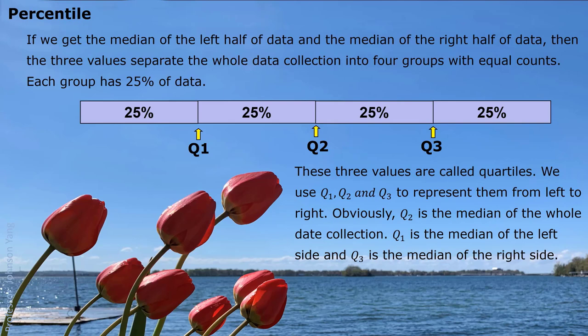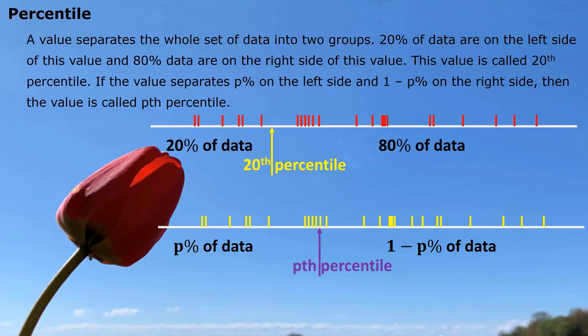We use Q1, Q2, and Q3 to represent them from left to right. Obviously, Q2 is the median of the whole data collection, Q1 is the median of the left side, and Q3 is the median of the right side half of the whole data collection.